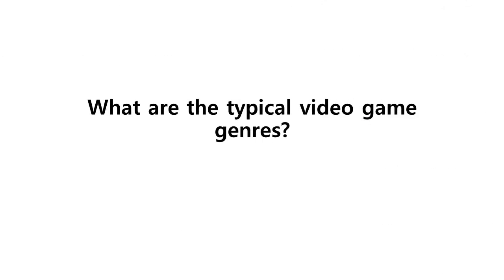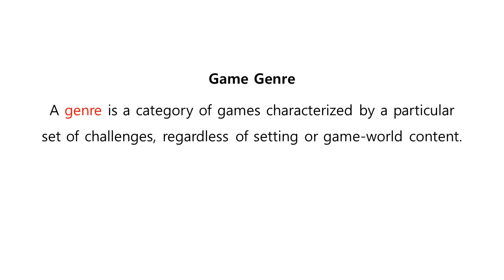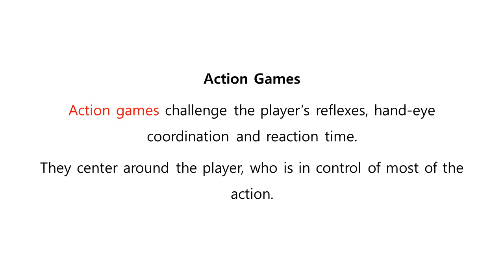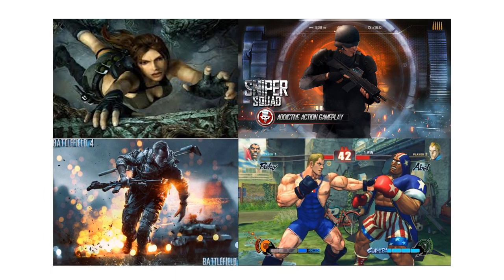What are the typical video game genres? A game genre is a category of games characterized by a particular set of challenges, regardless of setting or game world content. First on the list are action games. Action games challenge the player's reflexes, hand-to-eye coordination, and reaction time. They center around the player who is in control of most of the action. Examples of action games include shooting games, fighting games, as well as action-adventure games.